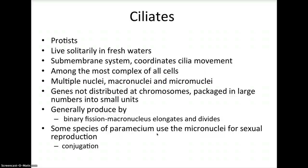Ciliates are among the most complex of all cells. They have two types of nuclei: a large macronucleus and usually several tiny micronuclei. The macronucleus has 50 or more copies of the genome. The genes are not distributed in chromosomes but are instead packaged into large numbers of small units. The macronucleus controls the synthesis of RNA and is also necessary for asexual reproduction. Ciliates are generally reproduced by binary fission, during which the macronucleus elongates and splits.